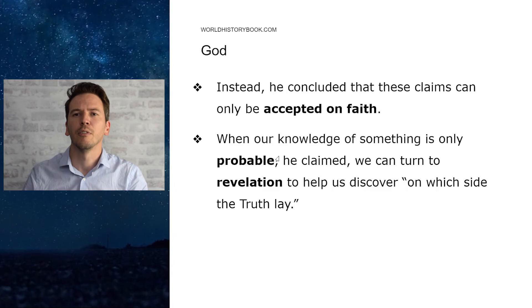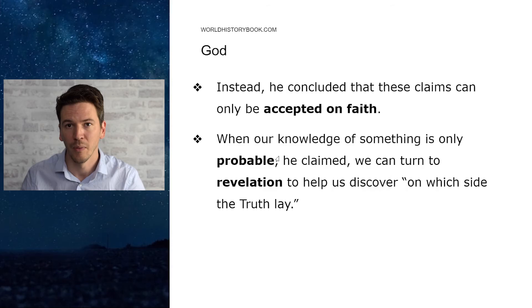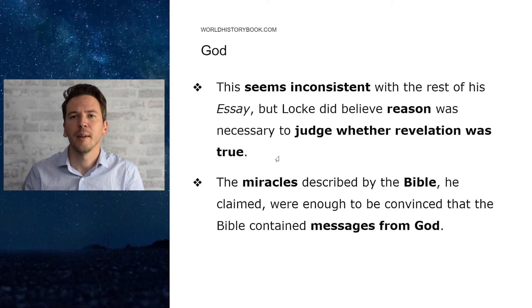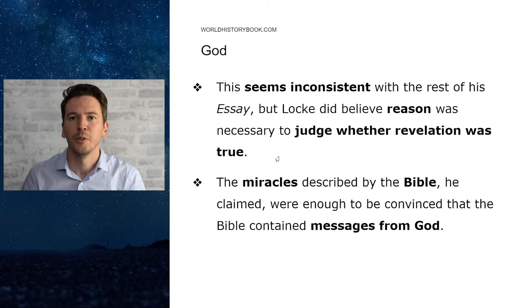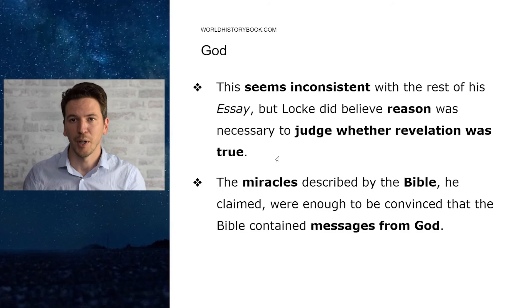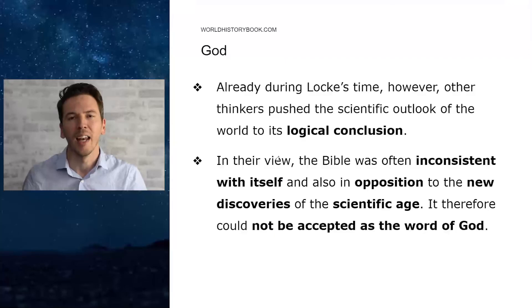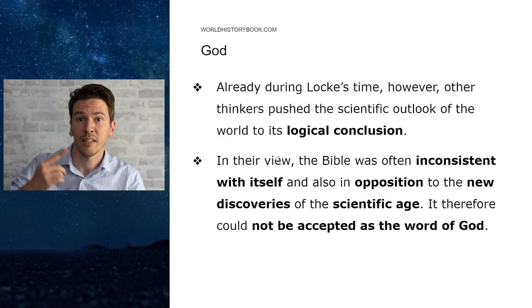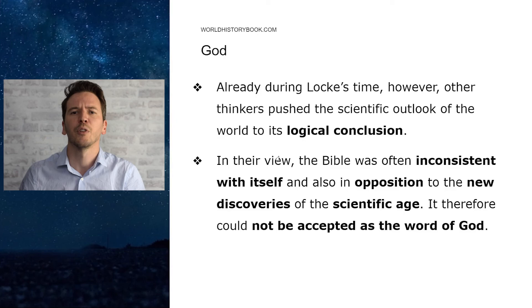So let me explain what was in Locke's mind. Locke concluded that these religious claims can only be accepted on faith. When our knowledge of something is only probable, he claimed, we can turn to revelation — to God's Bible — to help discover on which side the truth lay. This seems very inconsistent with the rest of his essay, but Locke did believe reason was necessary to judge whether revelation was true. The miracles described in the Bible, he believed, were enough evidence to be convinced that the Bible actually contained some messages from God. In this way Locke tried to make his reasoning consistent, but of course this isn't accepted anymore today. Even during Locke's own time, other thinkers pushed the scientific outlook of the world to its logical conclusion. In their view, the Bible was often inconsistent with itself and also in opposition to the new discoveries of the scientific age, and therefore could not be accepted as the word of God.